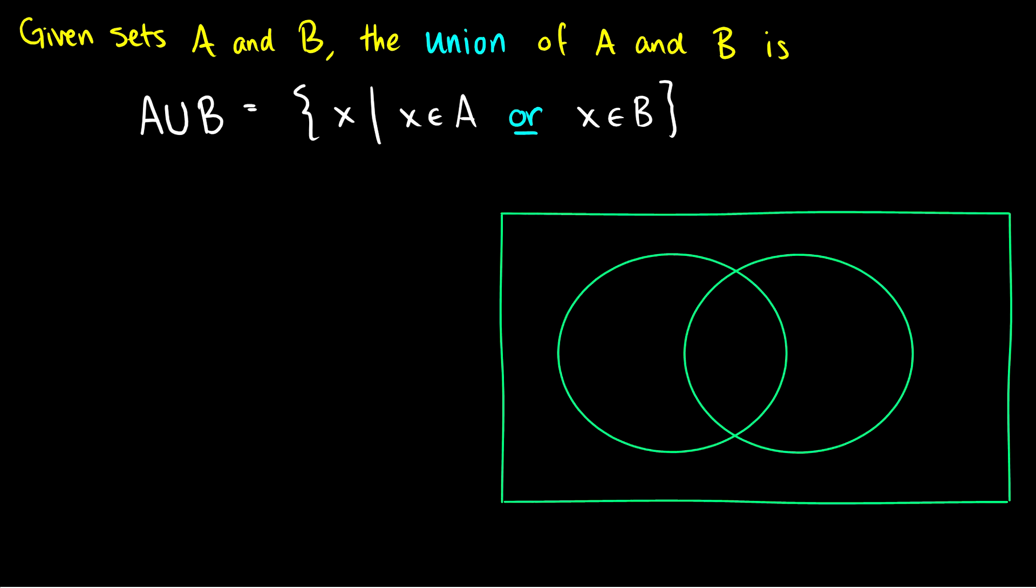The union is essentially whether the element is in A or in B. It can be in both. It can be in just one. So if we have A and B we'll use the same sets as last time.